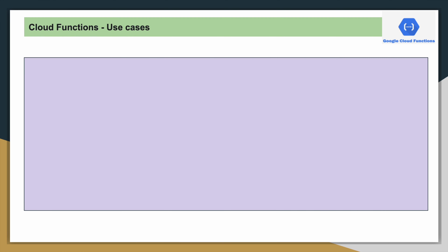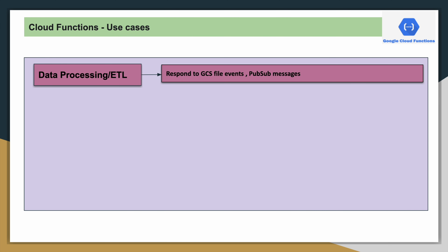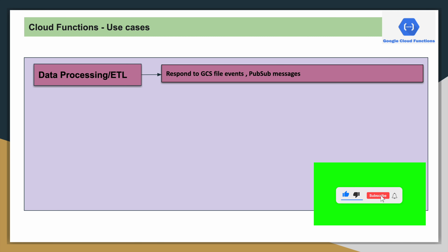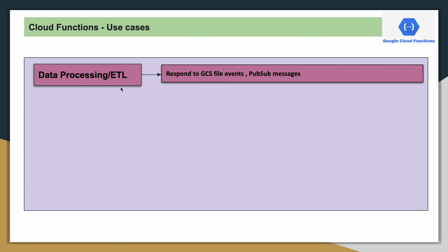Coming to the use cases — this is one of my favorite services. You can do so many automated tasks using Cloud Functions. For example, if you have to write some logic based on files placed on GCS or data published onto a PubSub topic, you can use Cloud Functions to write your ETL logic and write the processed data into BigQuery. You can write all lightweight ETLs using Cloud Functions.